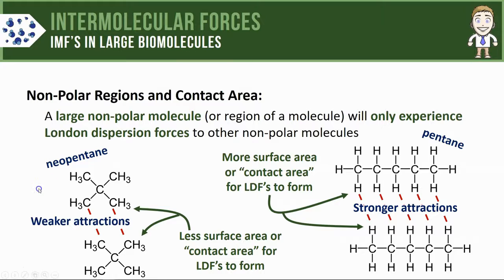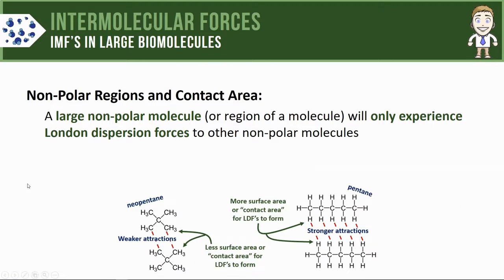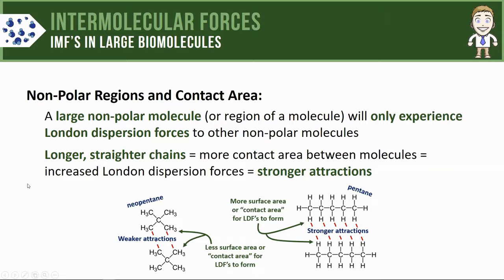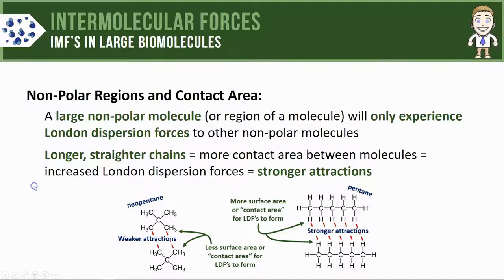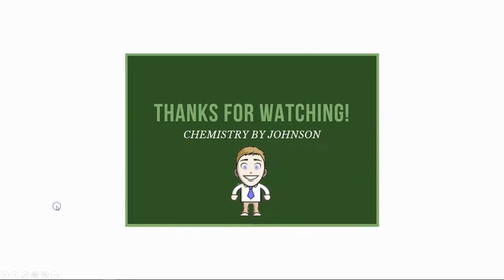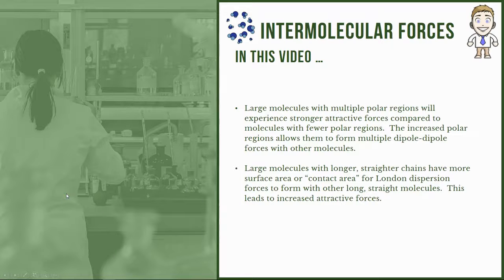This leads to the conclusion that pentane molecules experience stronger attractions while neopentanes experience weaker ones. We can summarize this as: longer, straighter chains mean more contact area between molecules, which increases London dispersion forces and increases the strength of attractions. That's our final key idea for the video, which concludes this lesson on intermolecular forces in large biomolecules.